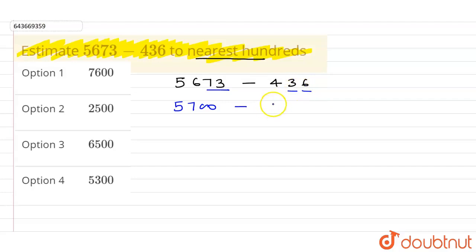After subtracting, the value is 5300, and the right answer is option 4.